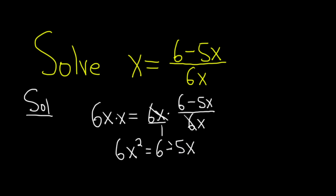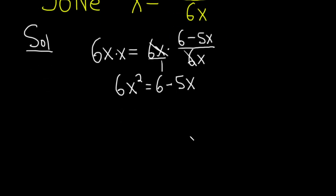So now we have a quadratic equation, and whenever you have a quadratic equation like this, in order to solve it, what you want to do is get all of your x's on one side, everything on one side, and set it equal to 0. So I'll do it in steps. We'll start by adding 5x to both sides.